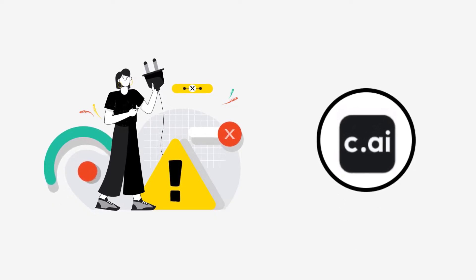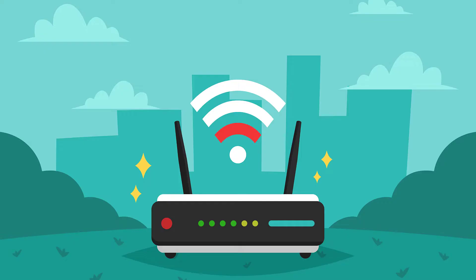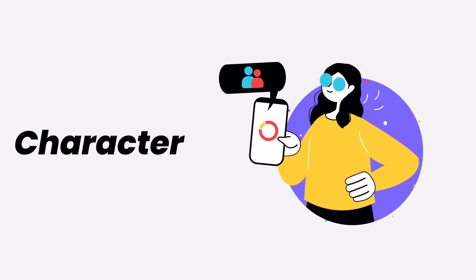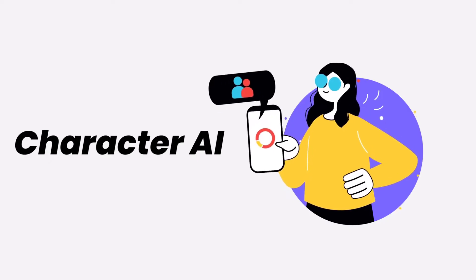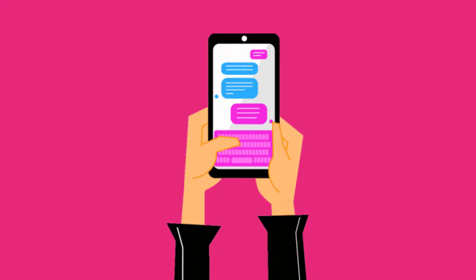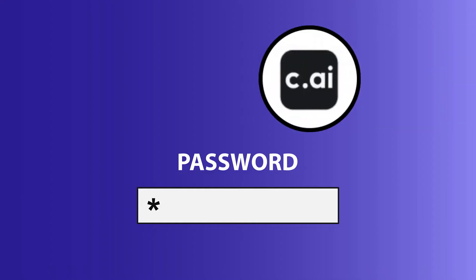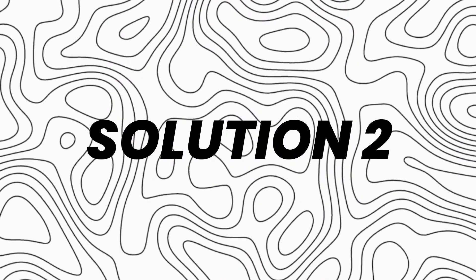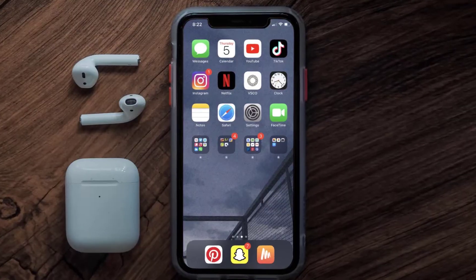It might be possible that you're not able to log into the Character AI app due to a connectivity issue. First of all, you need to make sure you have a strong and stable internet connection. Do a quick test by opening an app that runs on the internet, other than Character AI, and check if it's working. You can also try switching from Wi-Fi to mobile data and vice versa — doing this might help you log into the app.